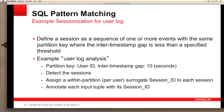But what do we mean by a session? Typically, in terms of pattern matching, we define a session as a sequence of one or more events with the same partition key, where the inter-timestamp gap is less than a specified threshold. To do this, we need to determine the user ID within the data set, then join multiple events and determine if they belong to the current session or a new session. This can be achieved by defining a value for the inter-row timestamp gap, so we can determine for each user when a particular session ends and a new session begins.